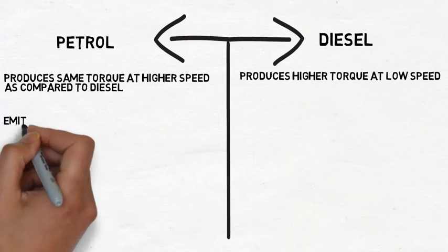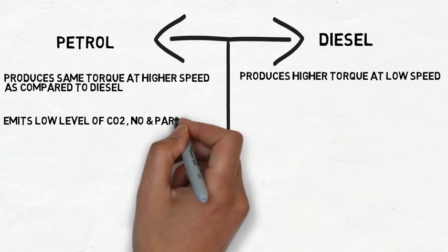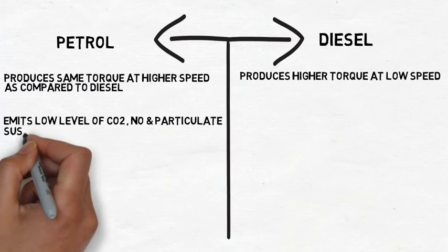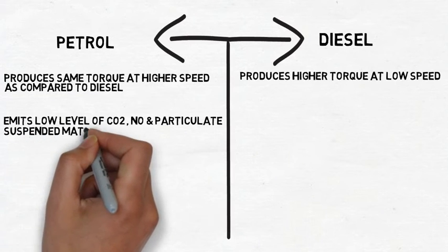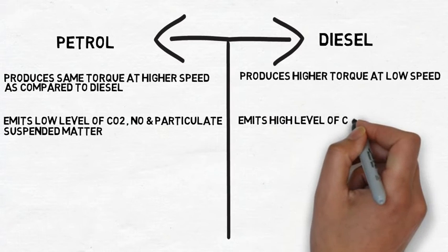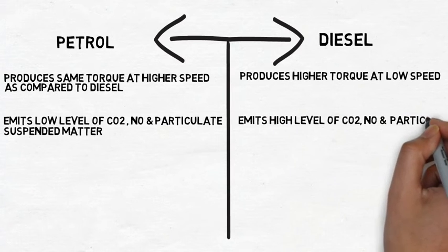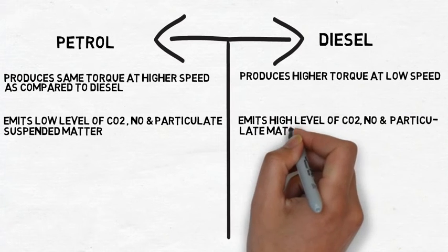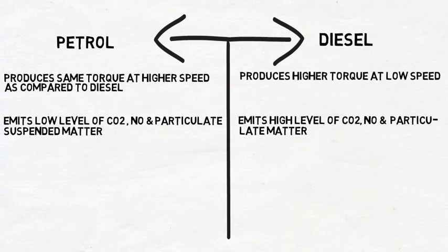Petrol emits low levels of carbon dioxide, nitrogen oxides, and particulate matter, while diesel emits higher levels of carbon dioxide, nitrogen oxides, and particulate suspended matter.